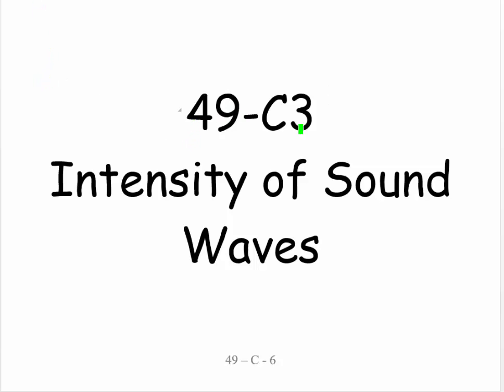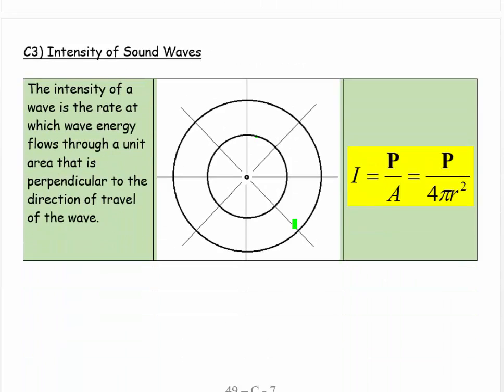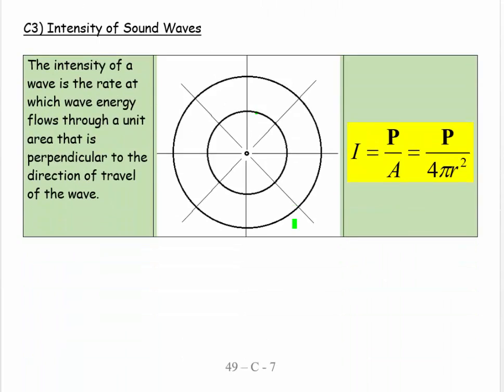Welcome, this is 49 C-7, and this is the intensity of sound waves. Let's look at this diagram down here. What we see is a source of sound which is emitting energy, energy per second. Energy per second is power, and that is radiating in all directions.